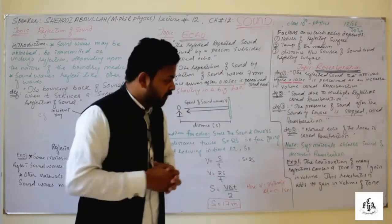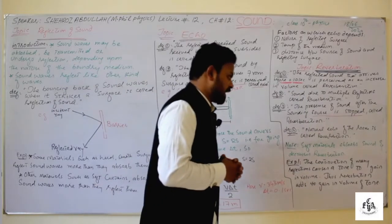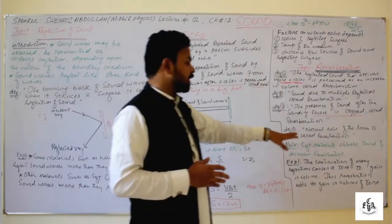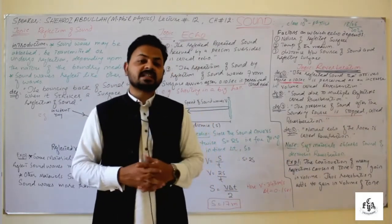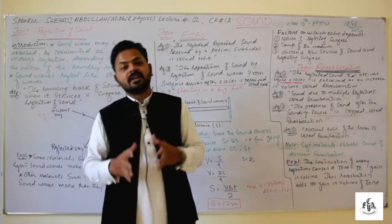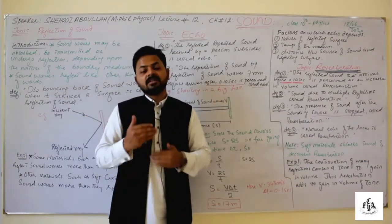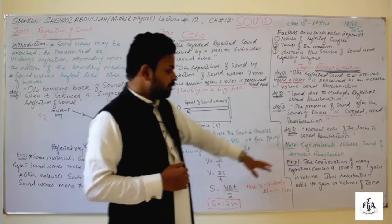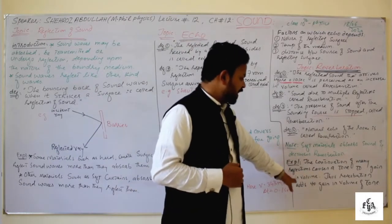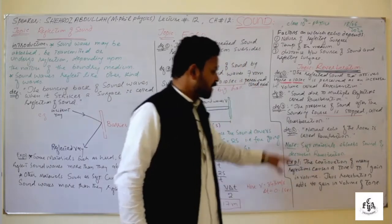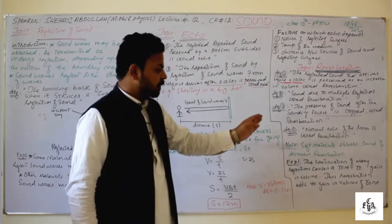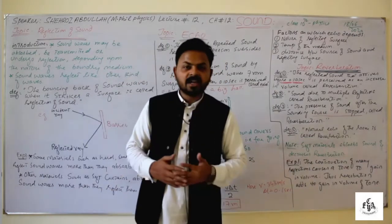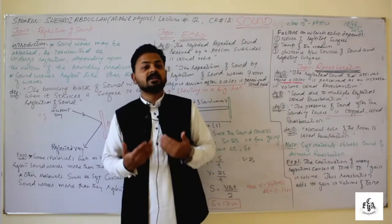The natural echo of the room is also known as reverberation. Soft materials absorb sound and decrease reverberation. Reverberation is decreased when there are soft materials in the room. The continuation of many-times reflection causes a tone to gain in volume — thus reverberation adds to the gain in volume of the tune. As a result of reverberation, an increase in the volume of sound takes place.